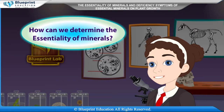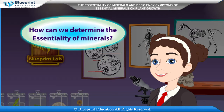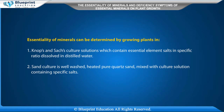To find out the essentiality and deficiency symptoms of various minerals: essentiality of minerals can be determined by growing plants in Knobson-Sachs culture solutions, which contain essential element salts in a specific ratio dissolved in distilled water. Sand culture uses well-washed, heated, pure quartz sand mixed with a culture solution containing specific salts.